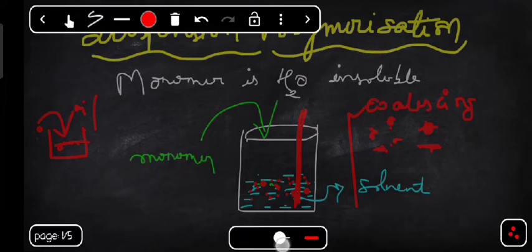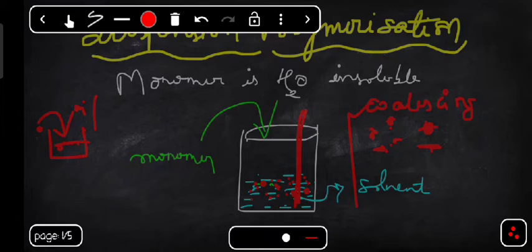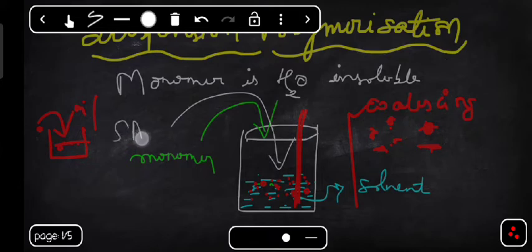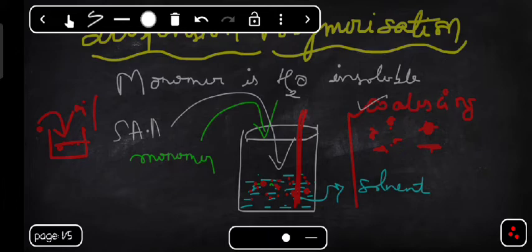We need to avoid that coalescing process. That can be done by the addition of some surface active agent. You need to add the surface active agent or protective colloid. SAA means surface active agent. Why is it added? It will prevent the process of coalescing — you will get fine droplets and they do not come together to form bigger droplets if you add the surface active agents.